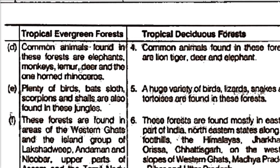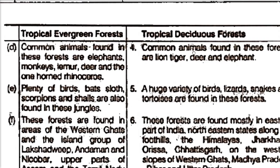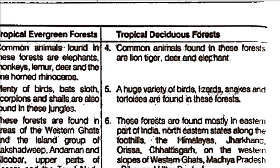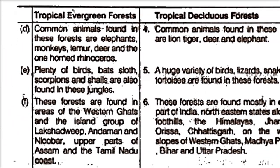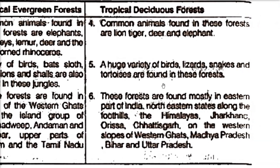Common animals found in tropical evergreen forests are elephants, monkeys, lemur, deer, and one-horned rhinoceros. There are also plenty of birds, bats, sloths, scorpions, and snails found in these jungles.